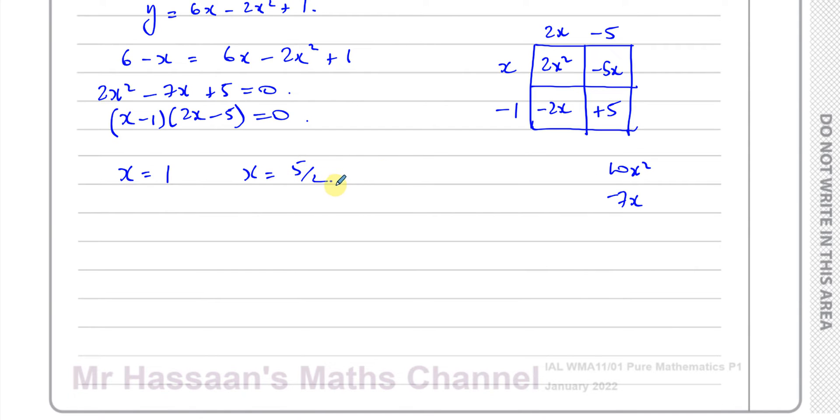What you can't do, and you will lose marks for, is if you just put this in your calculator and use the solving equation function to write down x = 1, x = 5/2. You can't do that. That will definitely lose you marks.